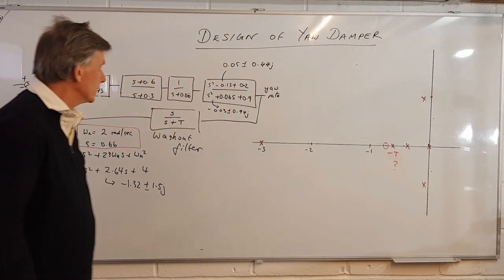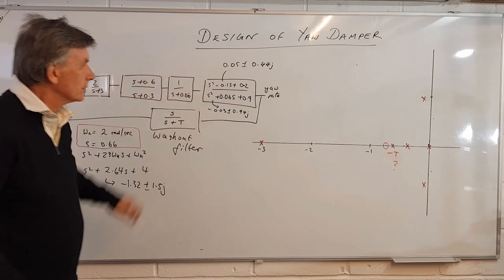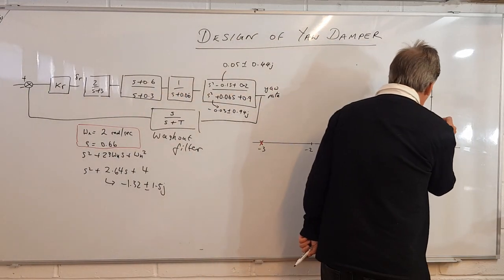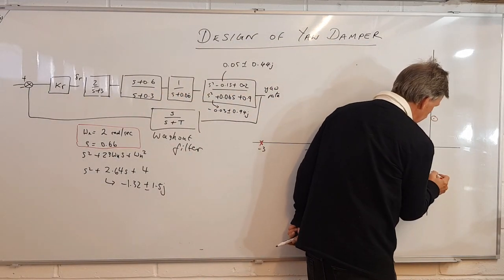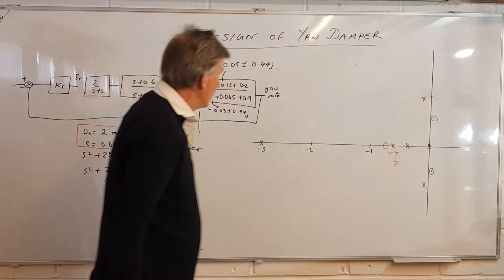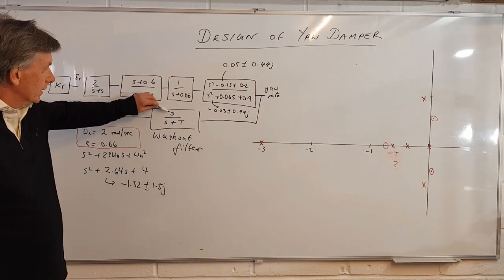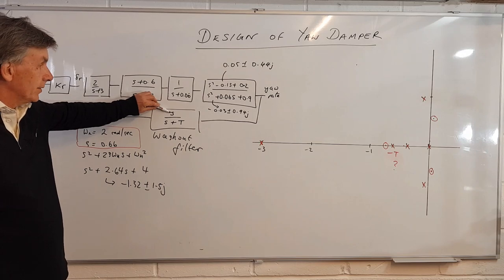So we've also got a final zero, easy to miss this one now, another zero at the origin.